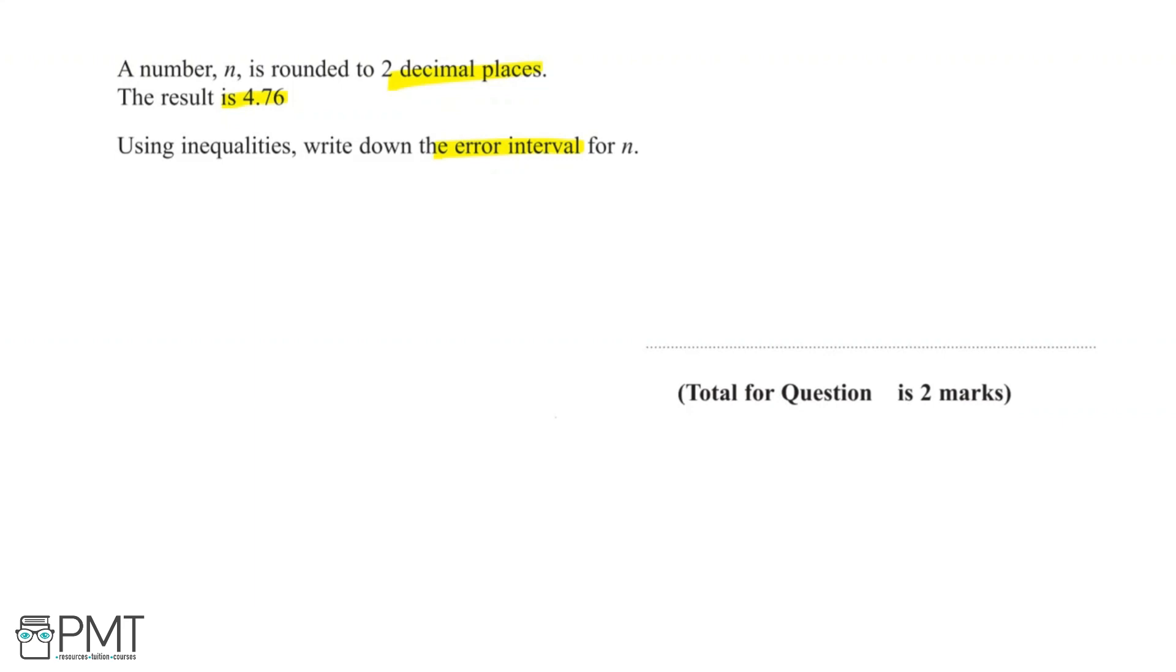And so let's represent this problem on a number line. We'll start with 4.76 in the centre, and on either end we'll have 4.77 and 4.75, and so in between this we'll have 4.755 and 4.765.